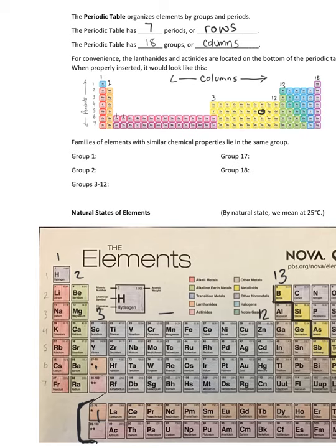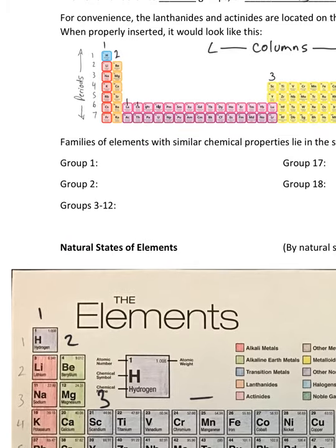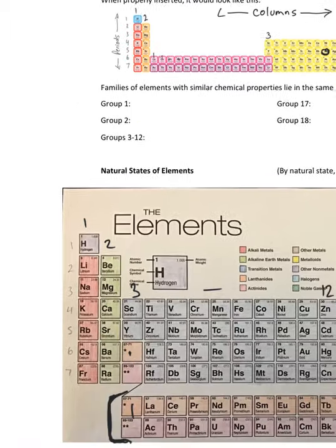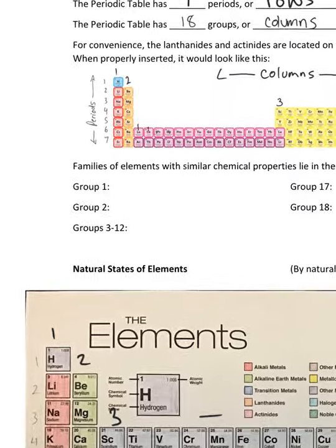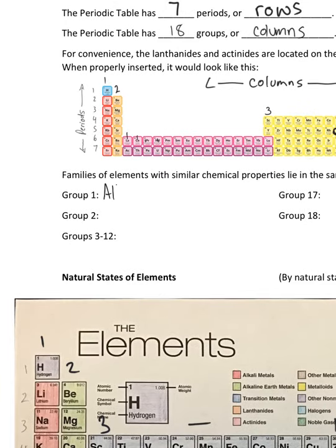Not only does every element have its own period and group, but it also has its own family. That's like our color-coded families that we color code on this colored version of the periodic table. Group one, everything in group one this first column is red aside from hydrogen, which is weird. We call them all the alkali metals.